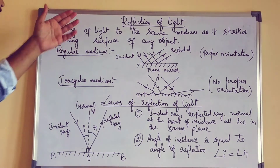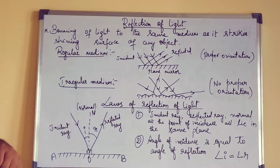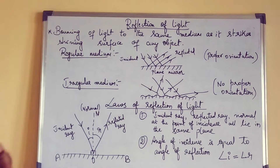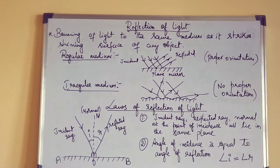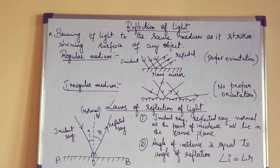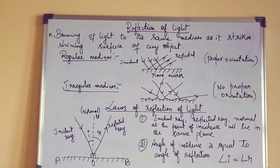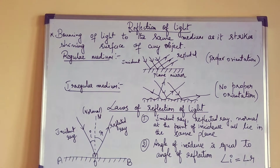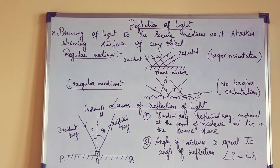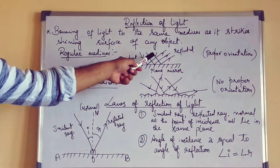Now I have used the word medium here. Why? Because light also requires a medium of transmission. So in this, medium has two types — one is regular medium and irregular medium, as you can see in the diagram.